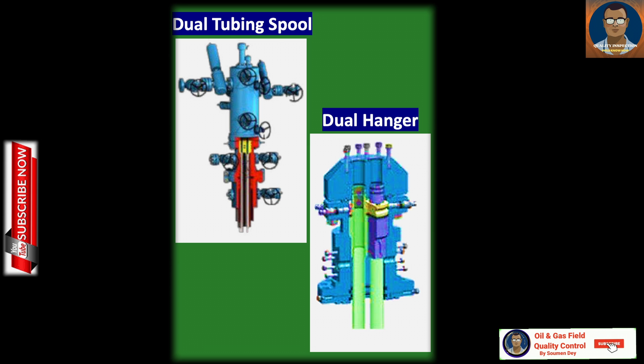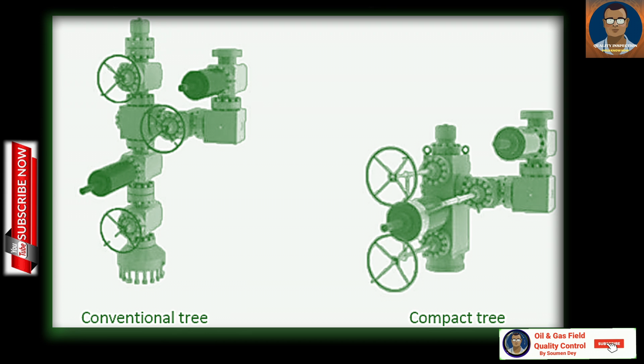Now we will discuss the types of christmas trees. Two types are available: conventional trees and compact trees. You can see in the photo — the left one is conventional and the right one is compact. Christmas trees can be supplied in various designs: solid block version and stacked with single gate valves. Both pictures are shown at the same scale so you can see the compact tree is smaller in volume and size. The compact tree's solid block design dramatically reduces the complete tree height, resulting in considerable savings in environmental infrastructure, especially on offshore installations.